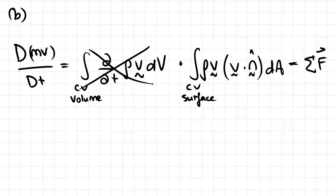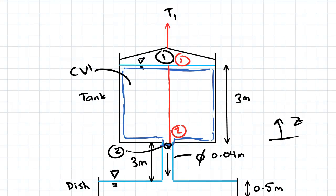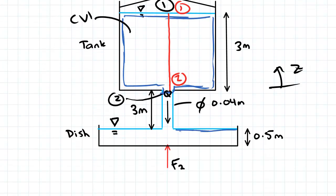Now we pick the control volume. This time we're looking at the dish, so my control volume is going to be similar but for the dish. We're going to have that little inlet there just to distinguish between the two surfaces. This will be control volume two, and I'll do the control volume surfaces in black.